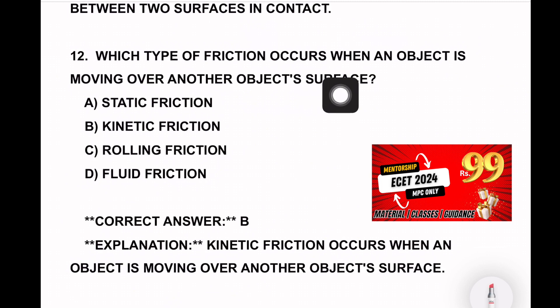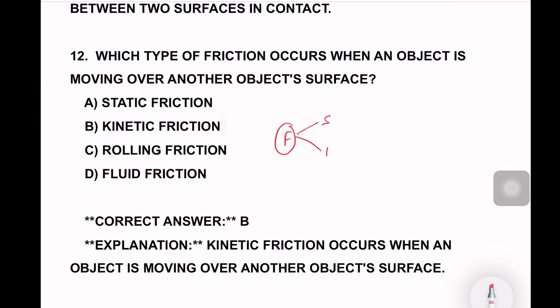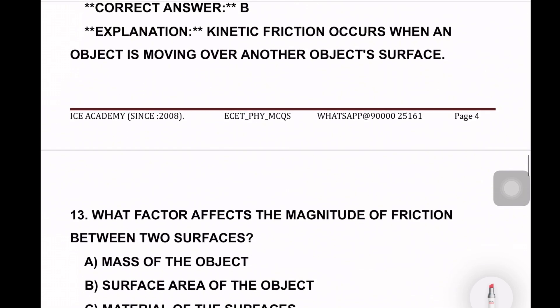Next question. Which type of friction occurs when the object is moving over another object surface? Static friction, kinetic friction, rolling friction, fluid friction. So frictions content of friction needs to type of divide. So the question's answer is kinetic friction. So option number B is the right answer.